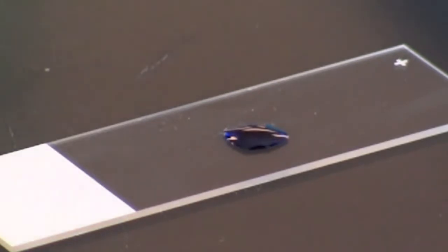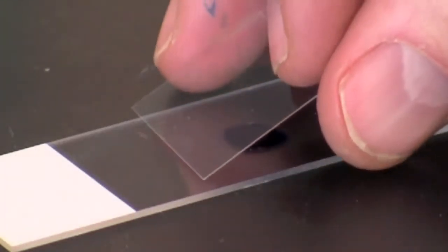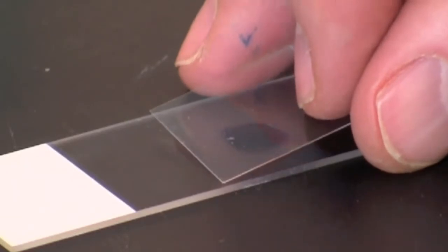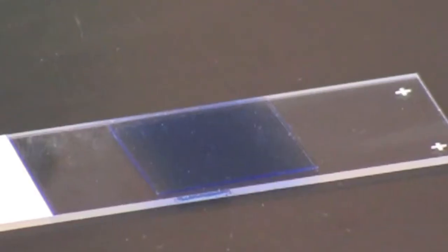Prepare the wet mount by lowering a coverslip over the stain, starting at a 45 degree angle. Avoid trapping bubbles under the coverslip.